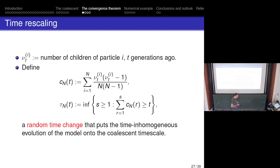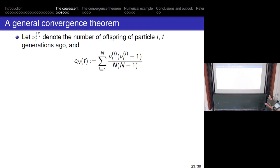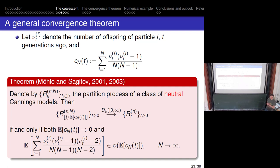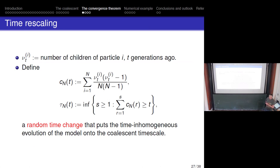Despite the non-Markovian difficulty, we pursue a strategy analogous to Möhle's. We define the coalescence probability C and need a time change. Because the offspring distribution can change dramatically each generation, our time change is random — it is the generalised inverse of the accumulated pairwise merger probabilities summed over generations. This random time change maps the time-inhomogeneous evolution of the model onto the coalescent timescale.